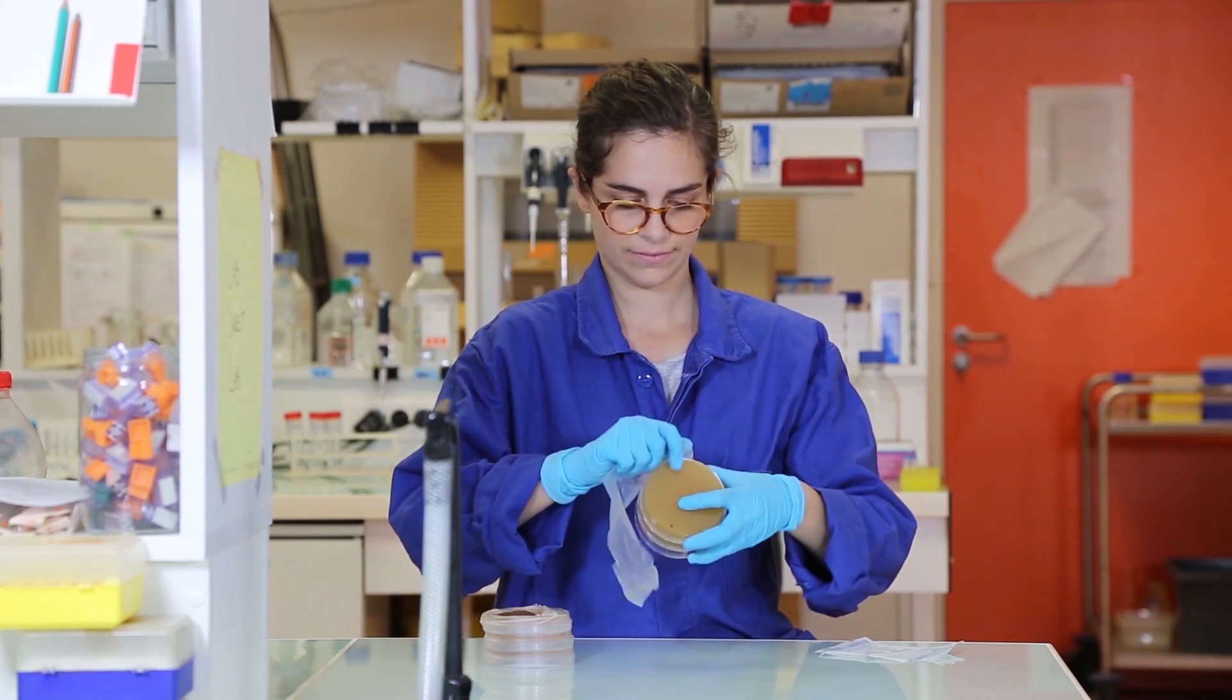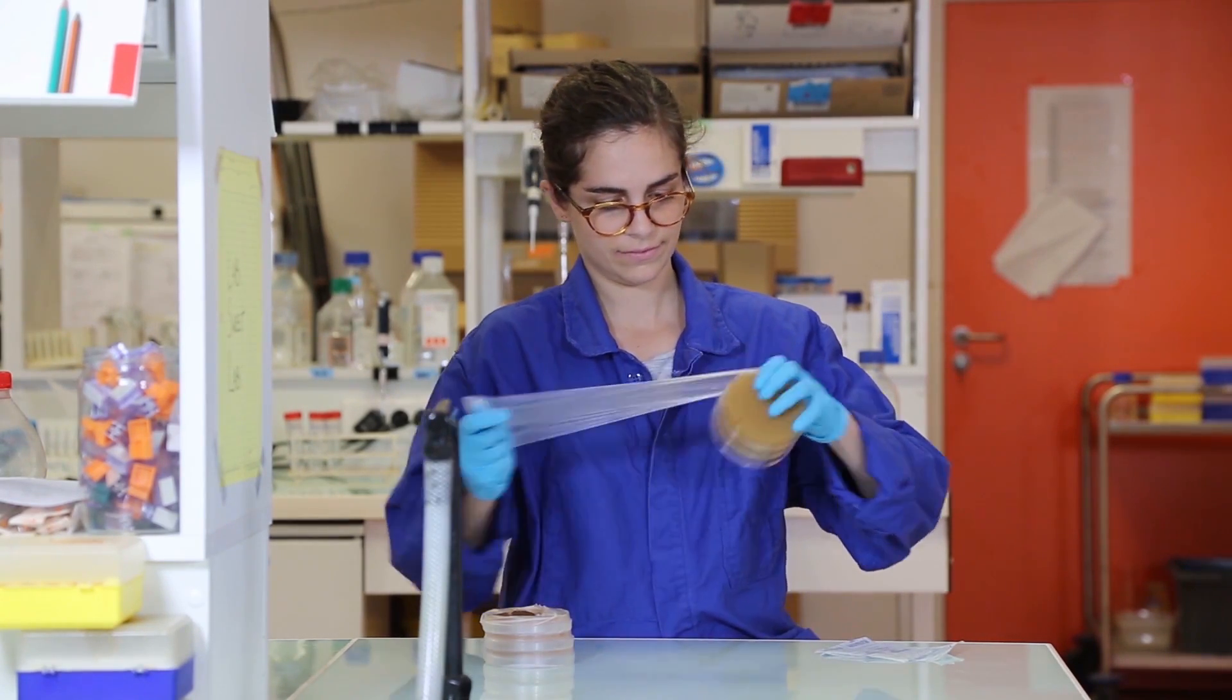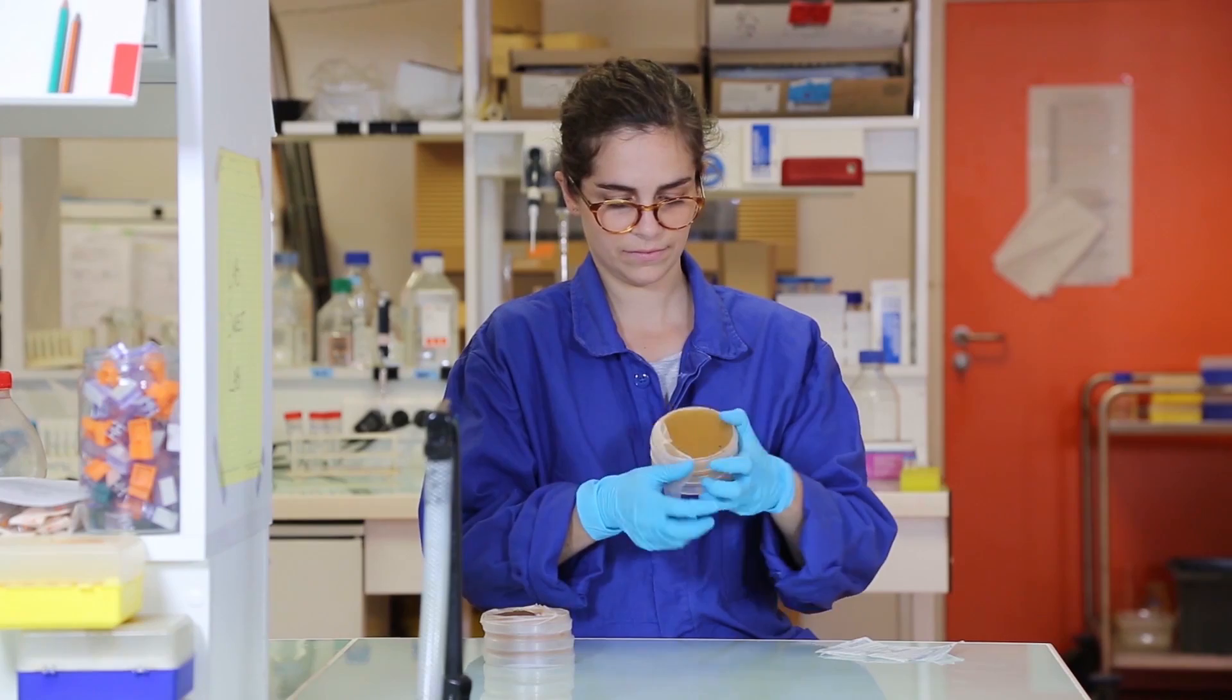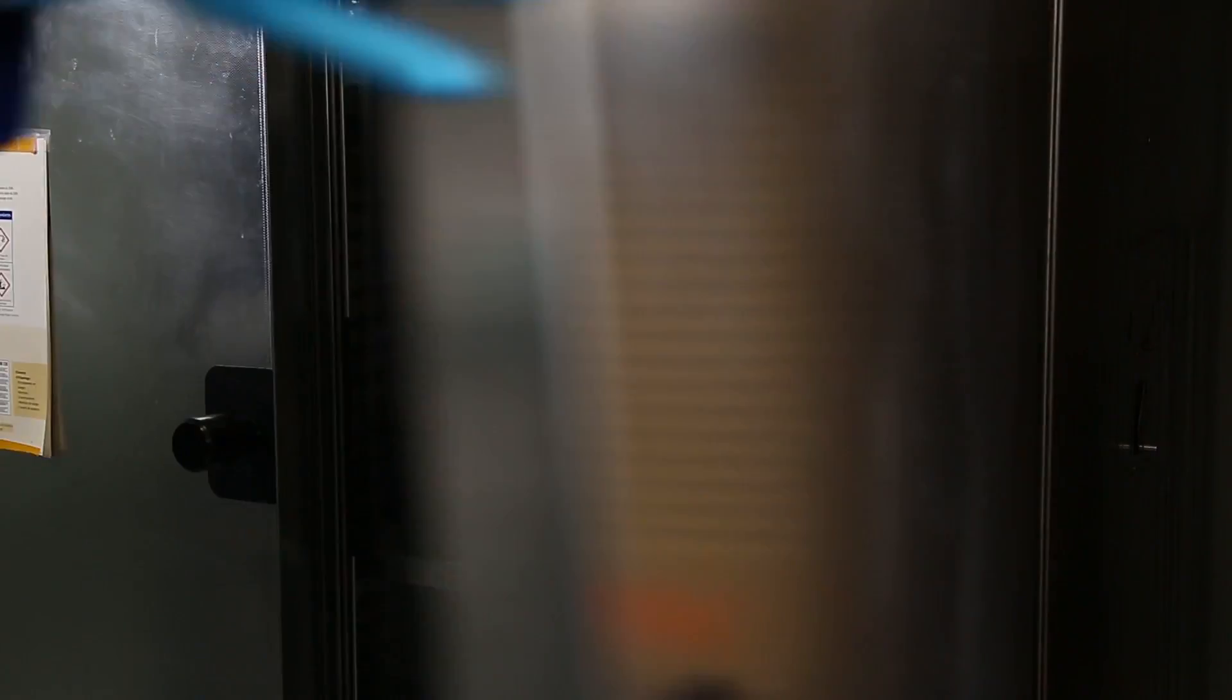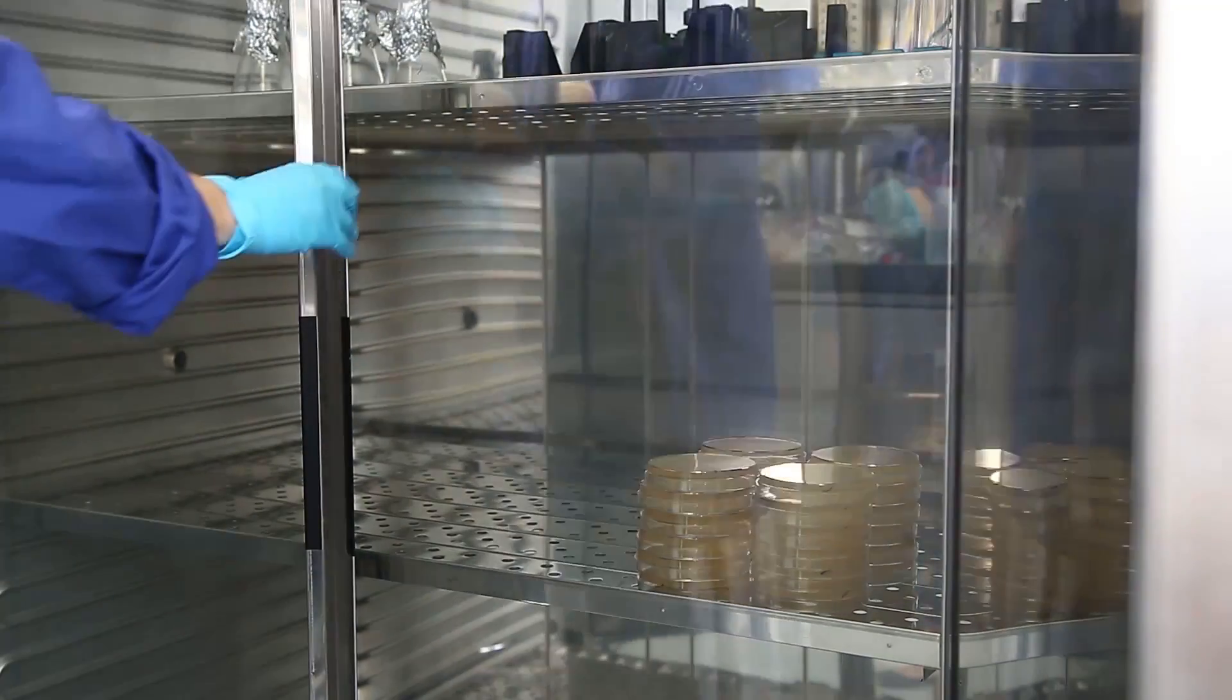If we count 50 cells on the 100,000-fold dilution plate, then we estimate that we have 500 times 10 to the 5th, or 5 times 10 to the 7th, about 50 million cells per gram.